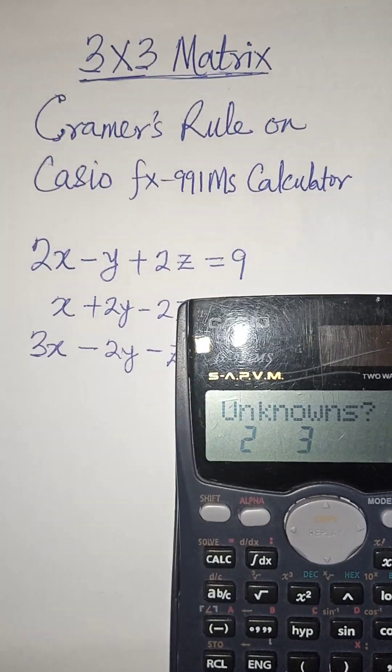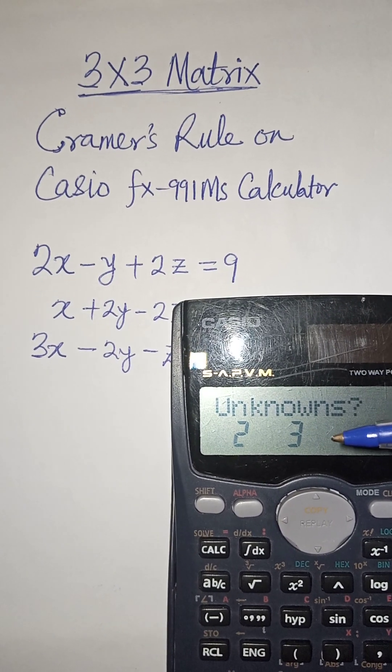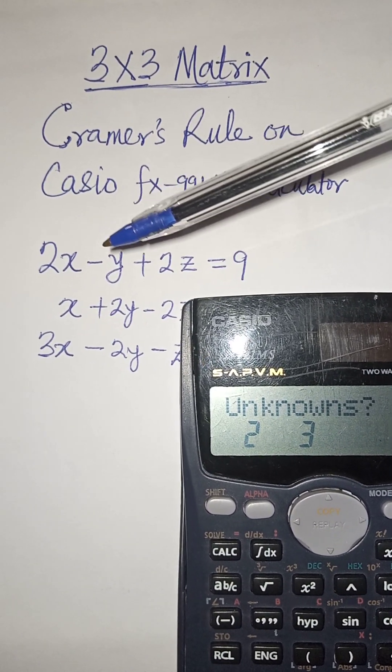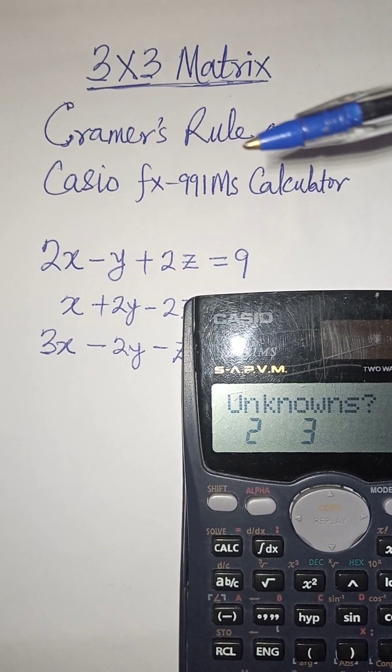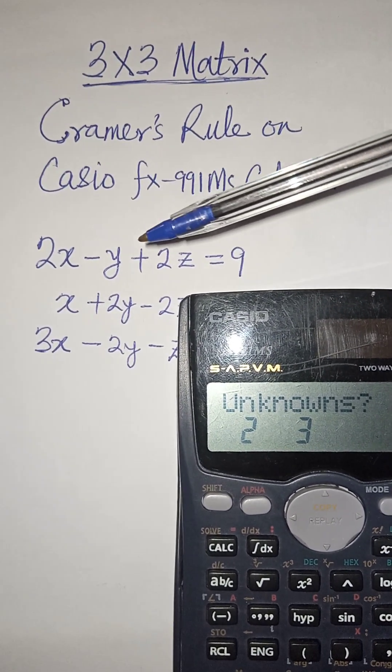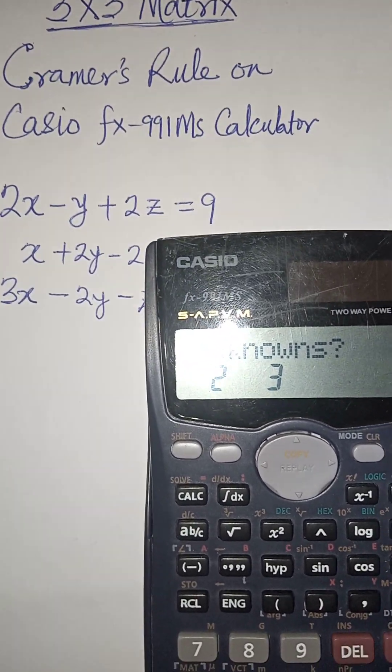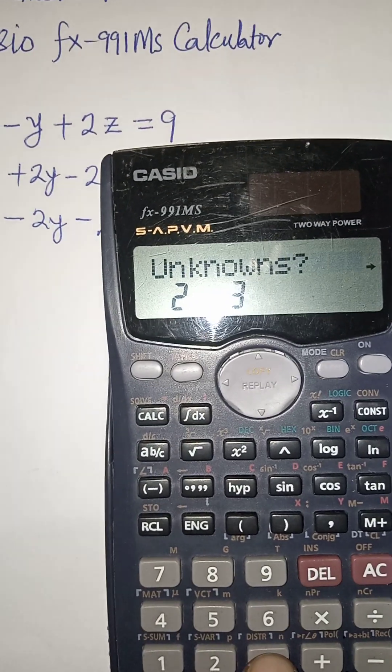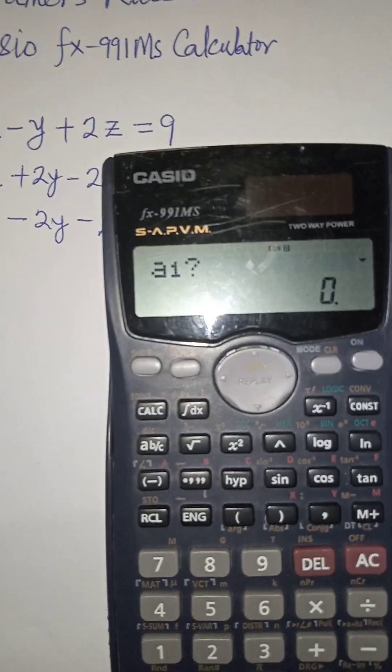From here you're seeing 2 unknown and 3 unknowns. If you're having 2 equations with only x and y, that's 2 unknown. But here we're having x, y, z, so we're talking about 3 unknowns. You have to press 3.